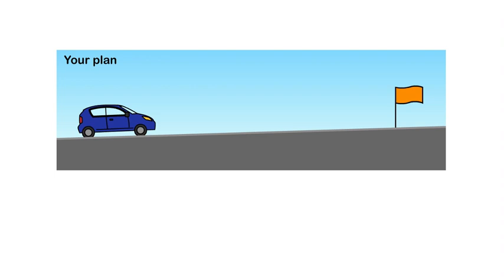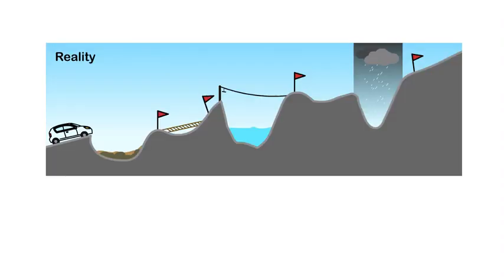Whenever we are delivering training, we will have a plan. We can see a blue car desiring to travel from the left side of the screen to the orange flag on the right, with not too many hurdles or hazards in that pathway. However, in reality, the journey for the white car to get to the desired destination might be very challenging. So we keep our eye on the goal, but also have to get through each challenge one step at a time.